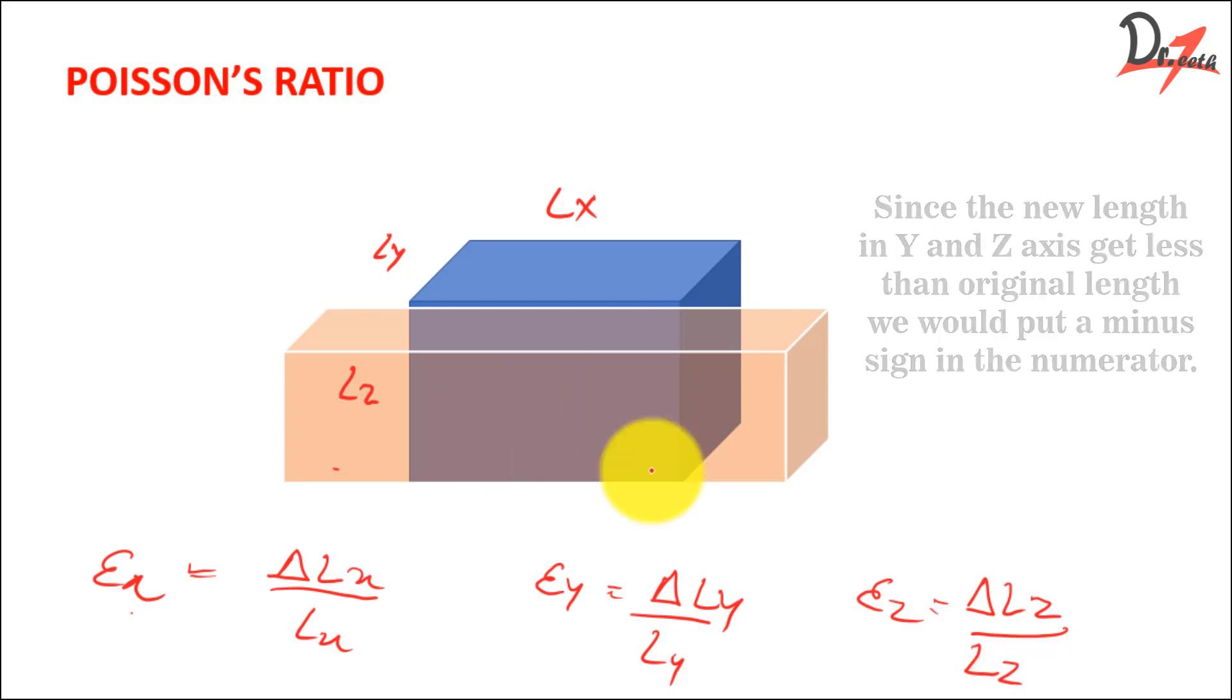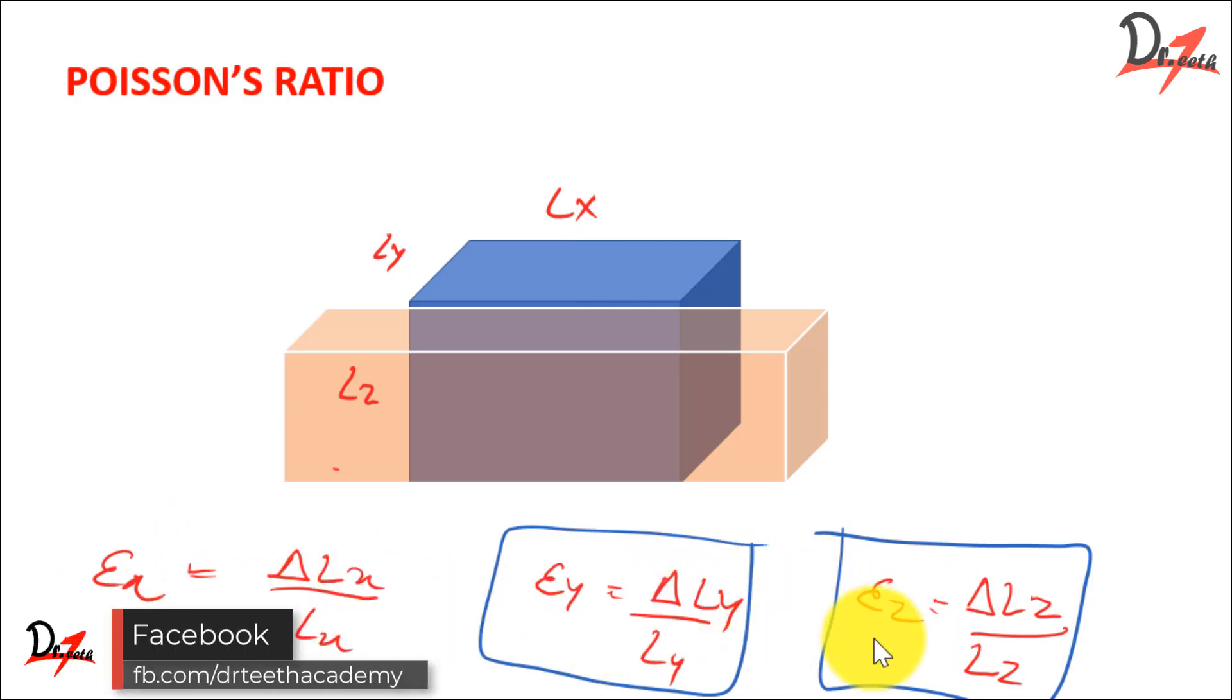Now the interesting thing to note here is that Ey is equal to Ez for the materials - this and this. This is equal for the materials and these two, they are proportional to this strain in the x-axis. So this is proportional to this and this is proportional to this and these two are equal to each other.